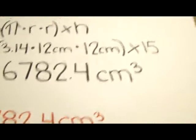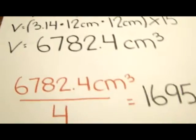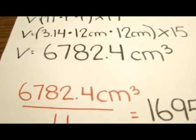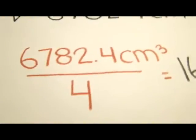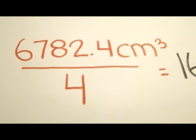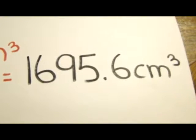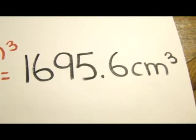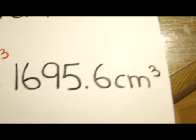Then I made an assumption that 1 fourth of the cheese was cut. So I divided 6,782.4 cubic centimeters by 4, then I got 1,695.6 cubic centimeters.